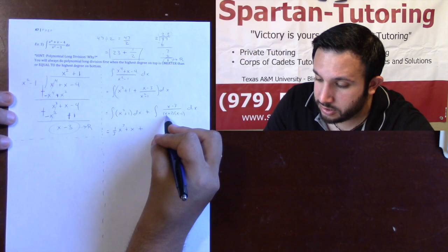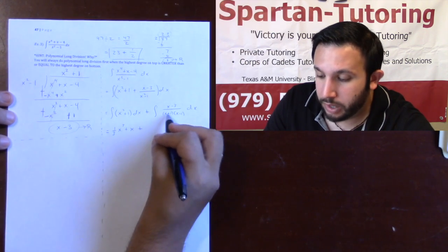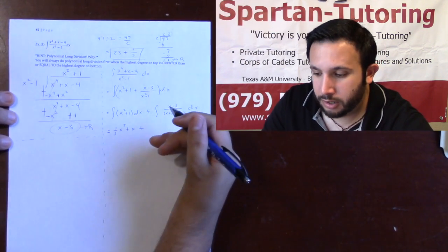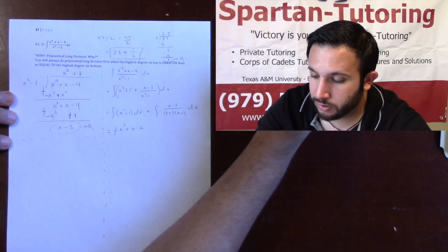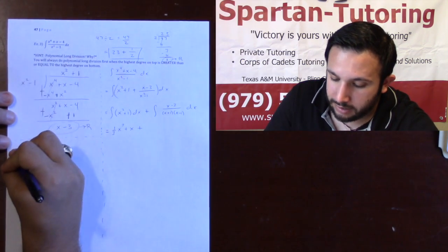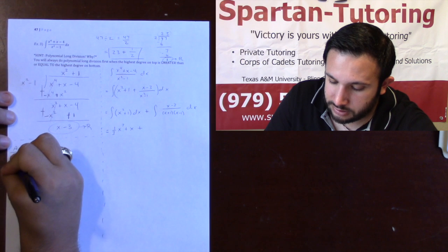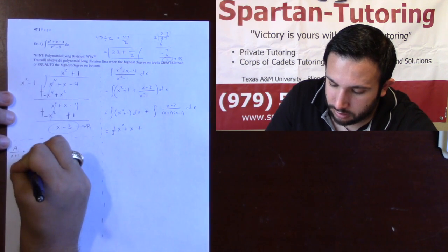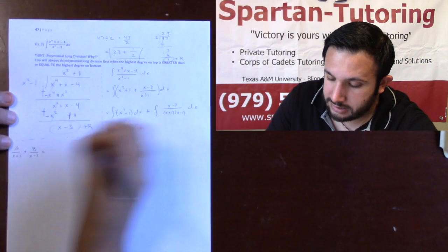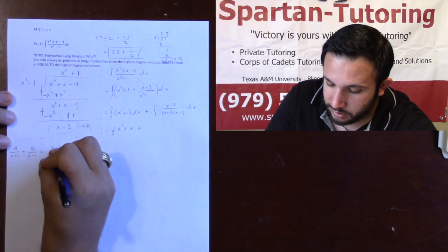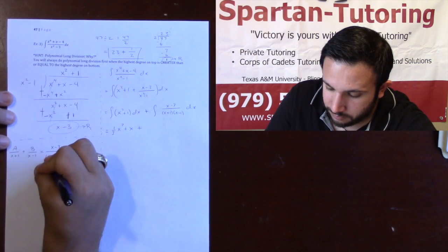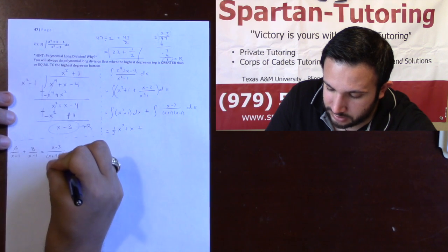And so, the way I decompose this, notice I have an x plus 1, x minus 1. Both those parentheses are linear. 1 less than a linear is an arbitrary constant on top. So I'm going to have a over x plus 1 plus b over x minus 1 is equal to that x minus 3 over x plus 1 times x minus 1.